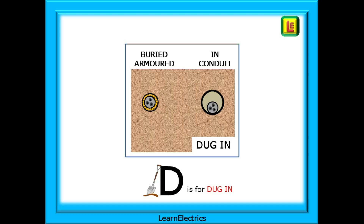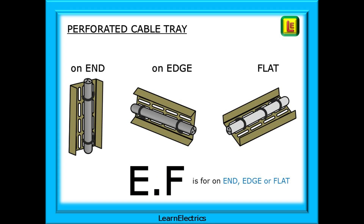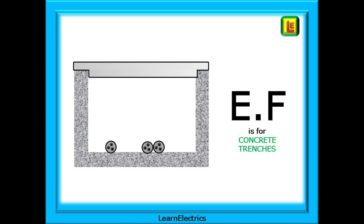Now, perforated cable trays - how do we get E and F to fit? A perforated cable tray can be on end, or on its edge, or it can be flat. So we have E and F as end, edge, or flat. Easy, really. Methods E and F also apply to cables laid in concrete trenches, but so far I have not come up with a suitable memory jogger for that. If you think of one, please let me know.